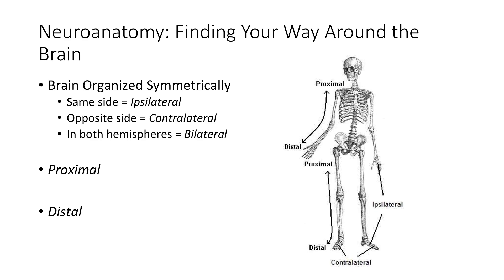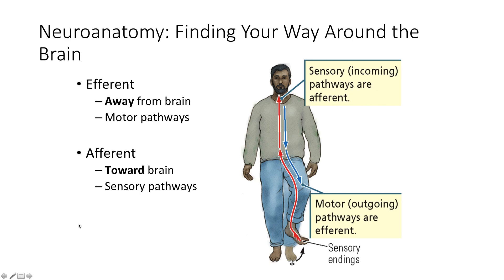For example, my right hand and my right foot are ipsilateral. My right hemisphere and my left hand are contralateral. The right and left thalamus together are bilateral. Two other important terms are proximal — meaning close to one another — and distal — meaning far from each other. For example, my right pinky is proximal to my right thumb, but distal from my left pinky.